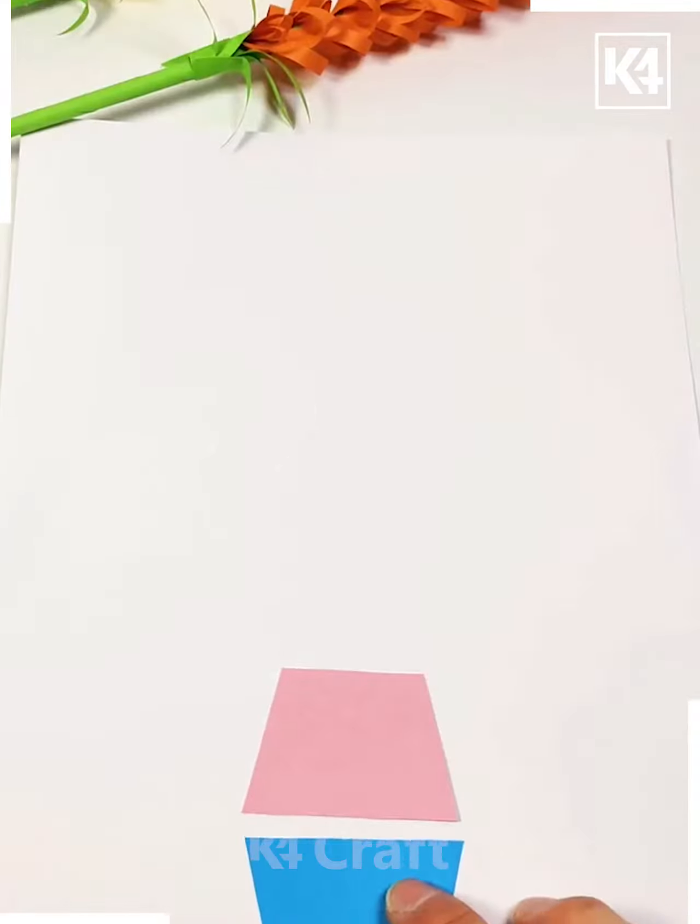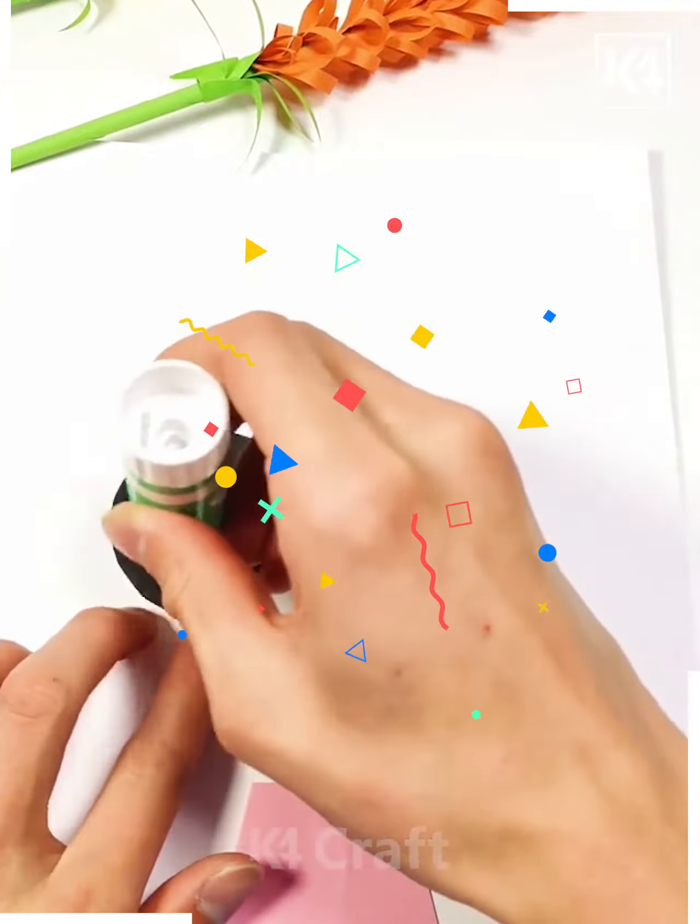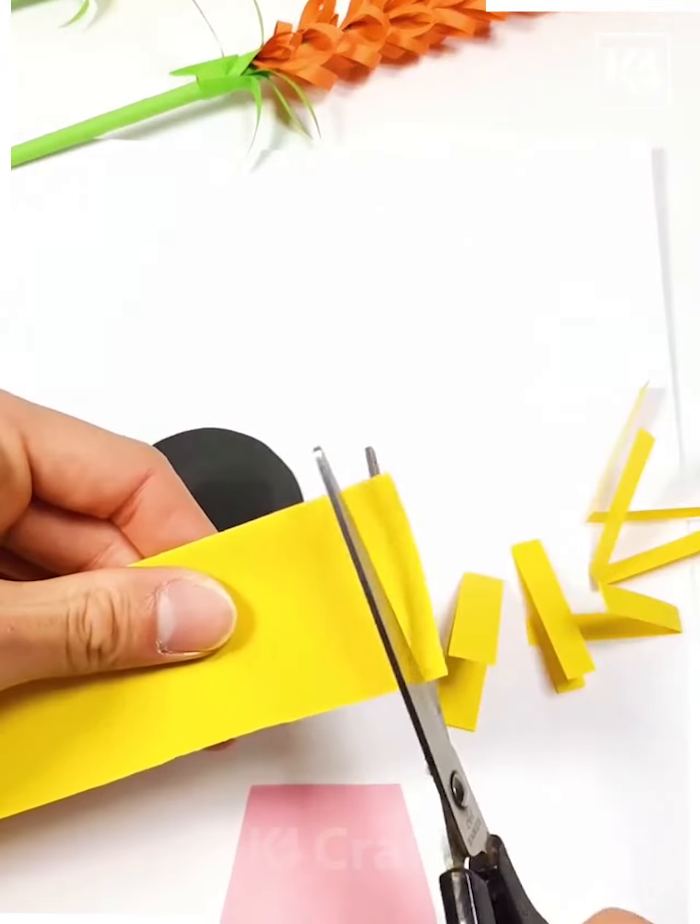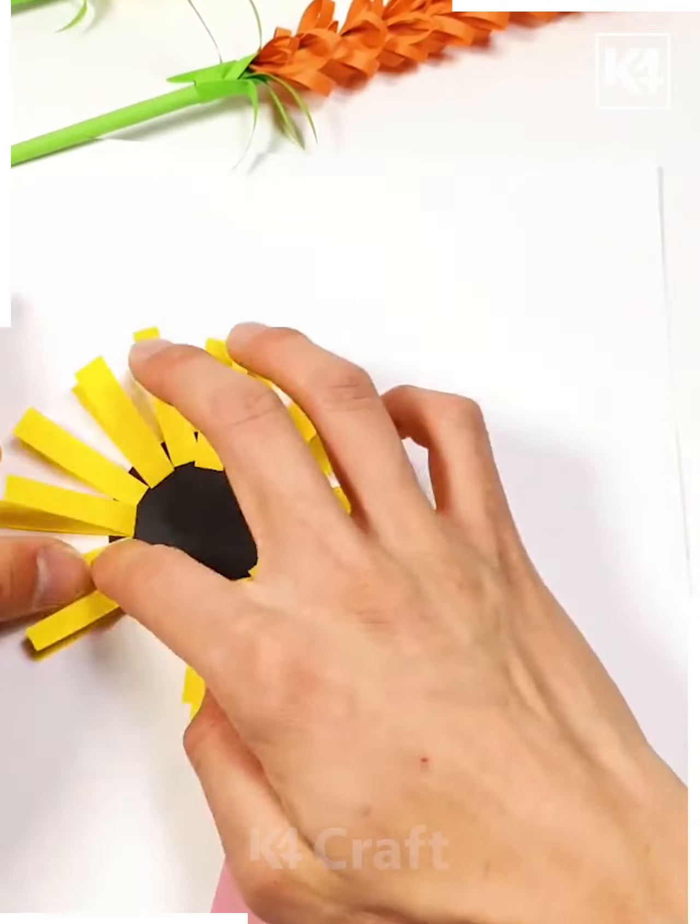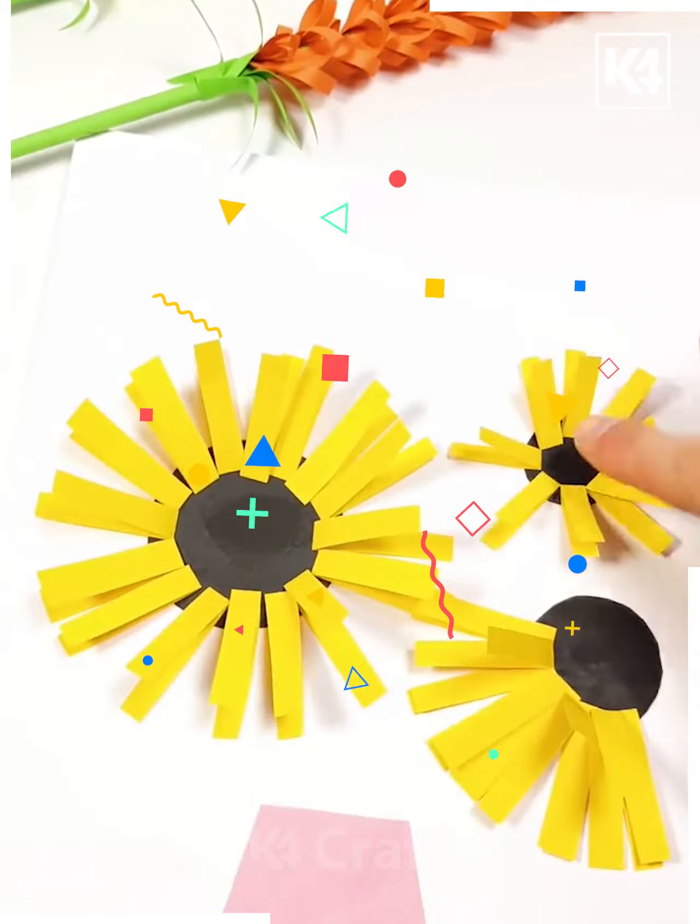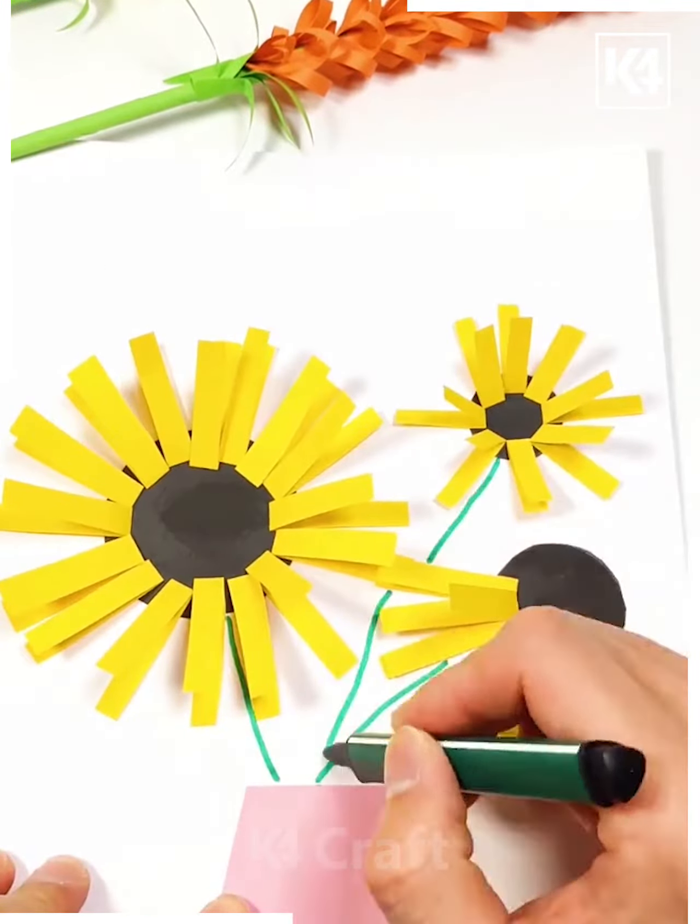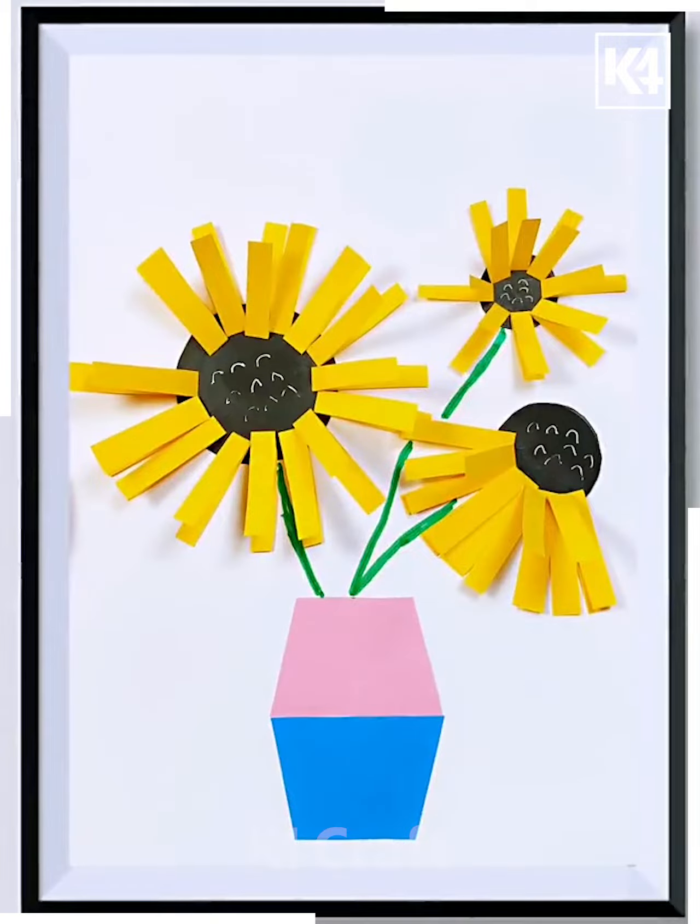Let's move ahead. Here we are making a sunflower flower pot. As you can see, we are taking yellow paper shavings for this, making the flower, and then we are completing it by making the stems and some more detailing.